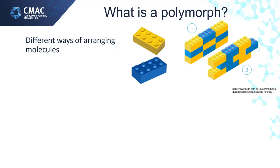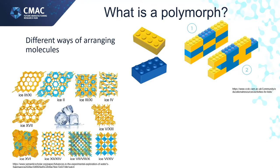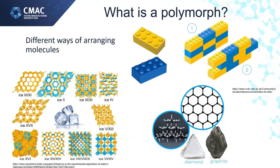We can find polymorphs in everyday materials. For example, ice exists as polymorphs, where the water molecules are arranged differently in each one. Diamond and graphite are also types of polymorphs — both consist only of carbon atoms.